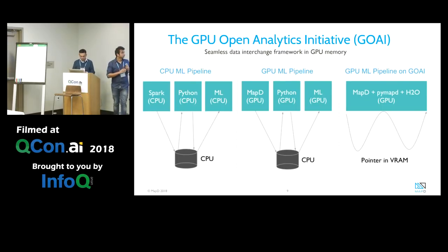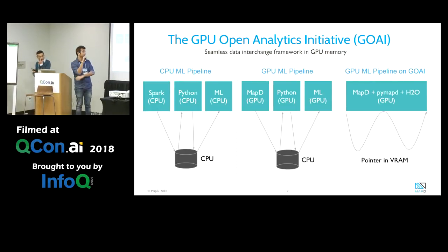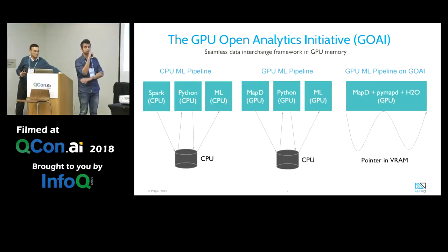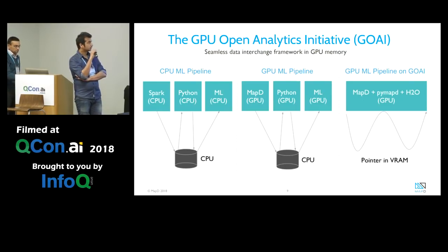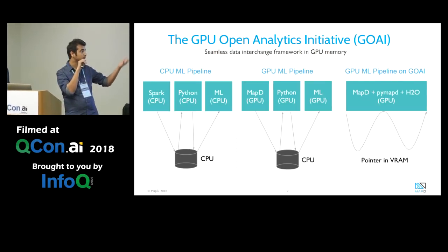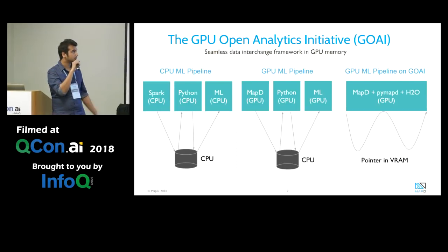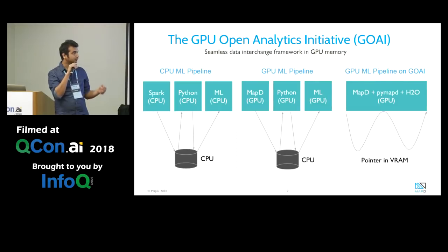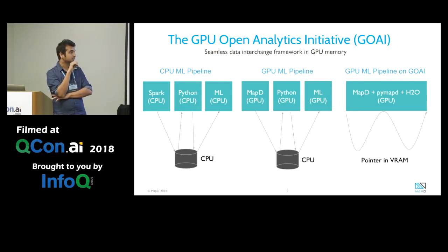Hello, good morning everyone. As Veda mentioned, I'm a data scientist at MapD. The traditional machine learning pipeline, as you can see on the leftmost corner, involves going through Spark, pre-processing data through Python, and doing machine learning on CPU. Then GPUs came along and we started doing it on GPUs — MapD is a GPU database, but the problem is we still had to copy data to host memory, meaning CPU memory, to do further processing, and that takes a lot of time especially with large amounts of data.